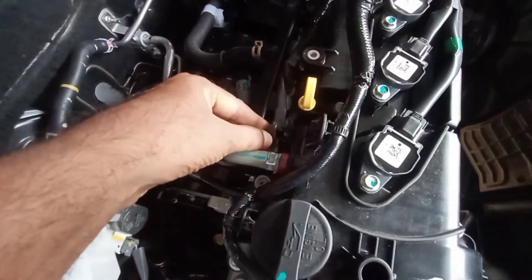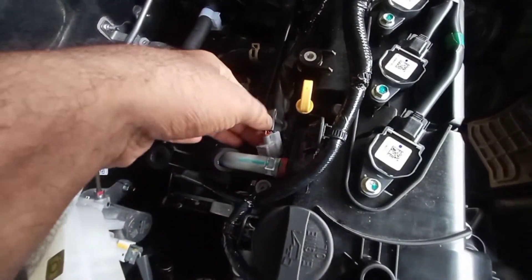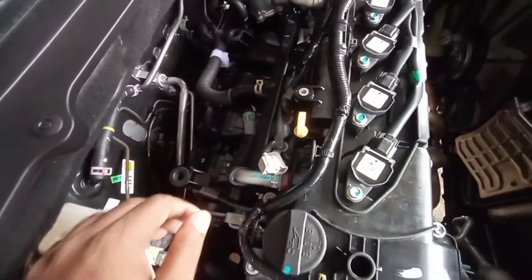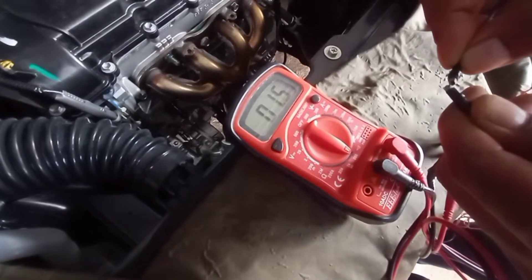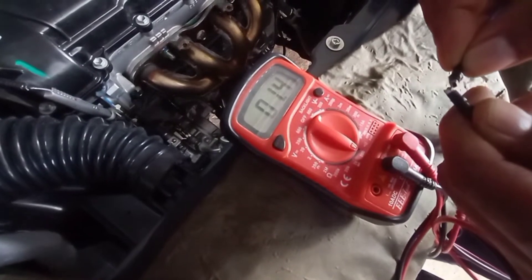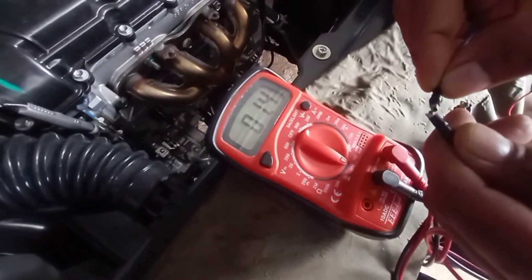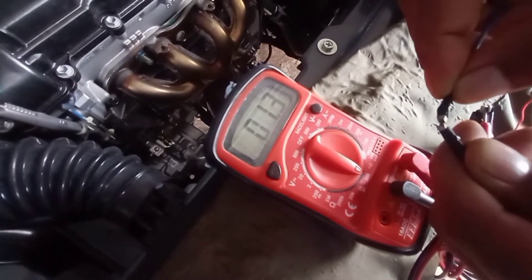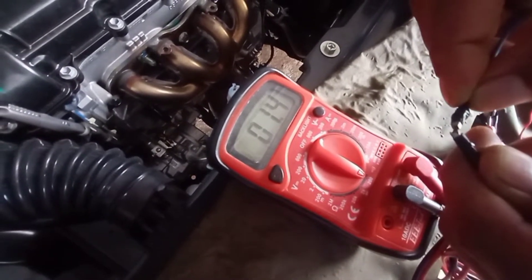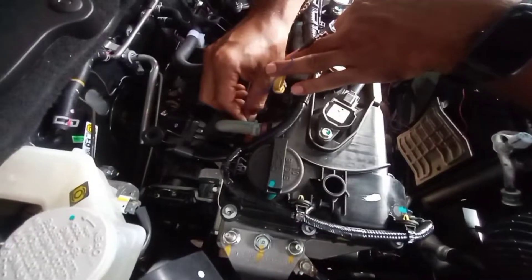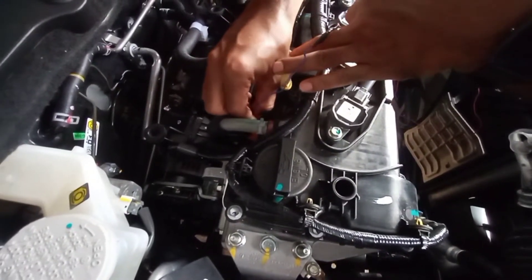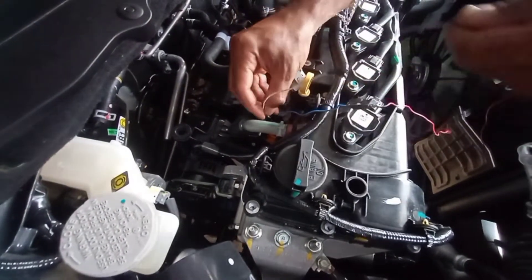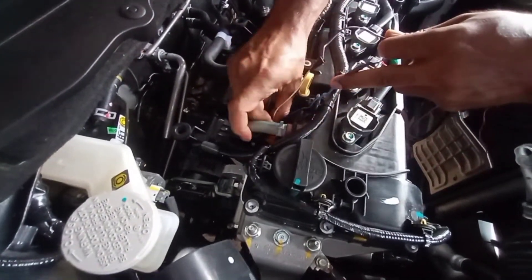Disconnect first fuel injector coupler from injector. First we check the lead wire resistance. It is 1.4 ohm.